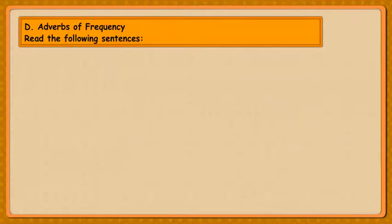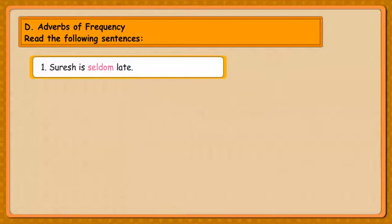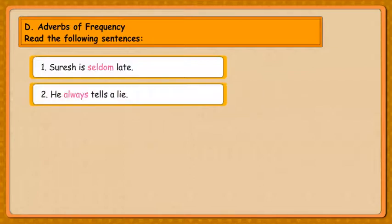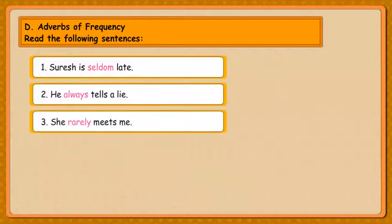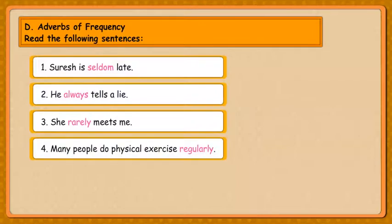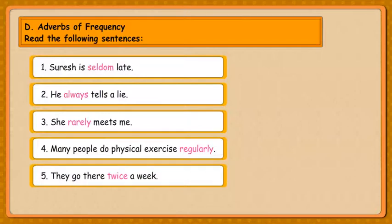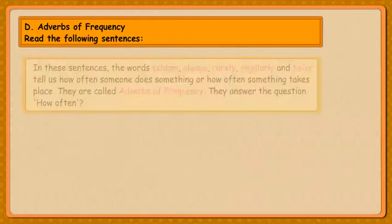D. Adverbs of Frequency. Read the following sentences. Suresh is seldom late. He always tells a lie. She rarely meets me. Many people do physical exercise regularly. They go there twice a week.